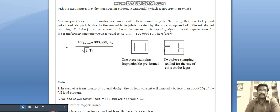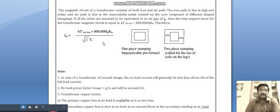If all the joints are assumed to be equivalent to an air gap of Lg, then the total ampere turns for the transformer magnetic circuit is equal to AT plus 800,000 Bm. The Im is equal to AT for iron plus 800,000 Lg Bm by root 2 T1.